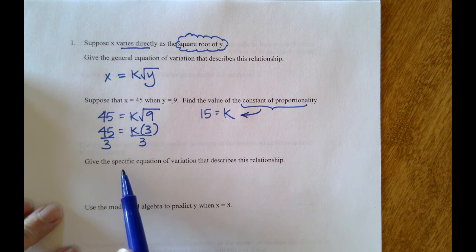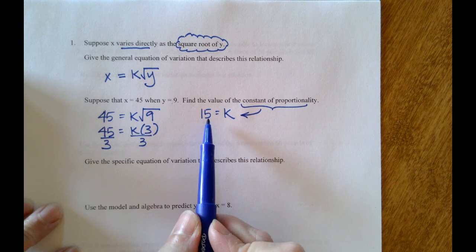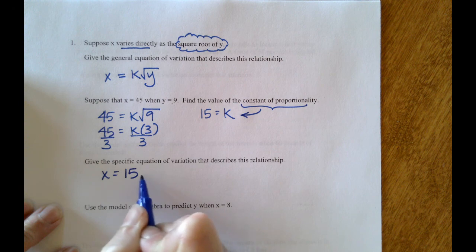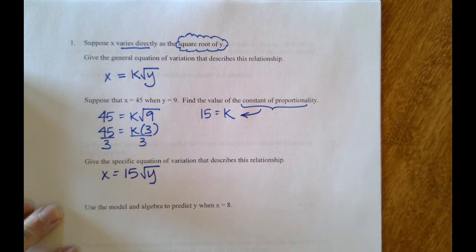Then they want the specific equation of variation to describe the relationship. That means we'll plug the k back into the general equation: x equals 15 times the square root of y.